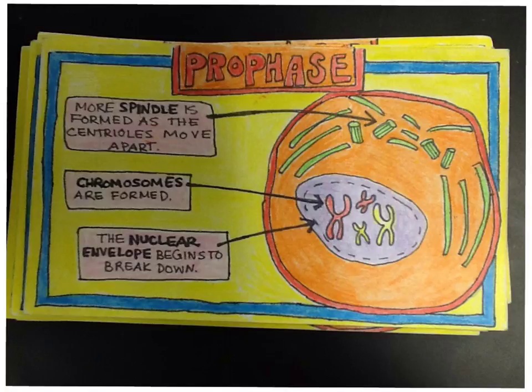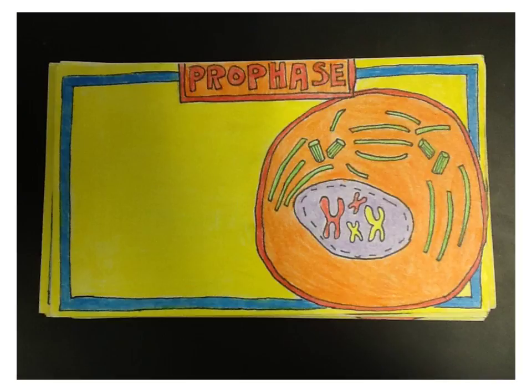There are going to be three cards for prophase, three for metaphase, three for anaphase, and three for telophase. Here is her second prophase card. Notice she does not have to provide any description here — she did it on the last one, and it would be redundant. You can see the nuclear envelope is going more away and the centrioles are migrating towards the poles, animating that process.